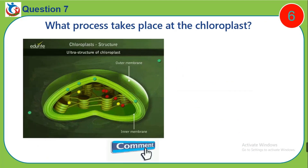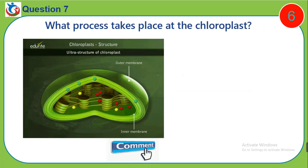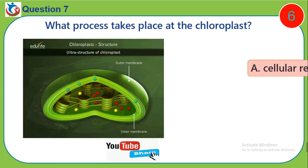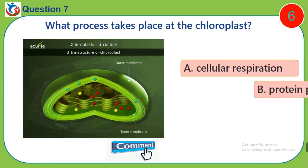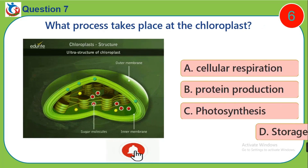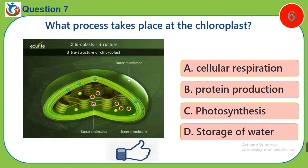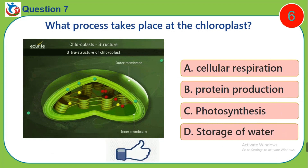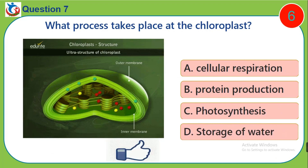Question 7. What process takes place at the chloroplast? A. Cellular respiration. B. Protein production. C. Photosynthesis. D. Storage of water.